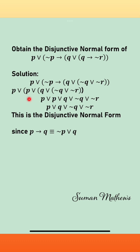The negation p has become p, and we have a disjunction here. So when you open this bracket you get p disjunction p disjunction q disjunction negation q disjunction negation r. Now we know that p disjunction p is simply p, so this becomes p disjunction q disjunction negation q disjunction negation r.